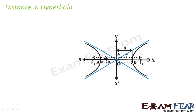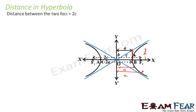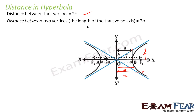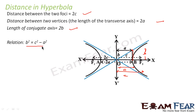In the hyperbola, the distance from the center to a vertex is called a, and the distance from the center to a focus is called c. Here, c is greater than a. The value b is the distance obtained by taking point (a, 0) and drawing a perpendicular to meet the asymptote. The distance between two foci is 2c, the distance between two vertices is 2a (the length of the transverse axis), and the length of the conjugate axis is 2b. The relation b² = c² − a² holds.